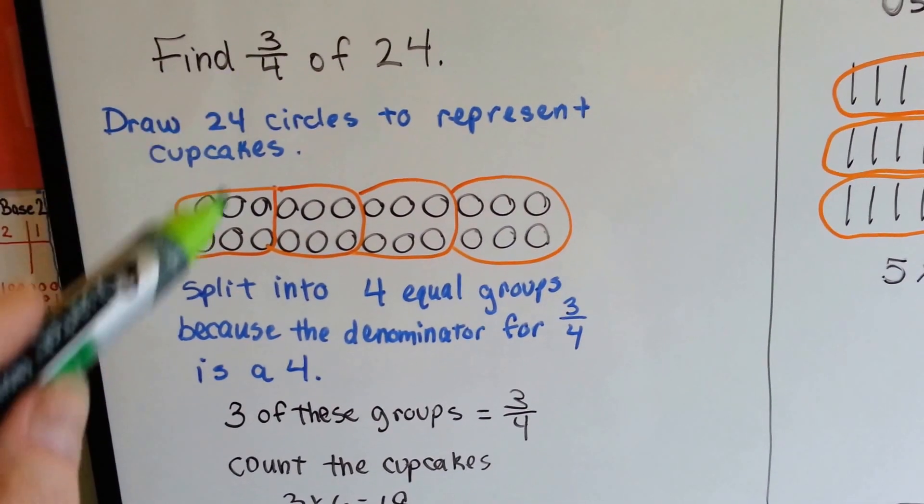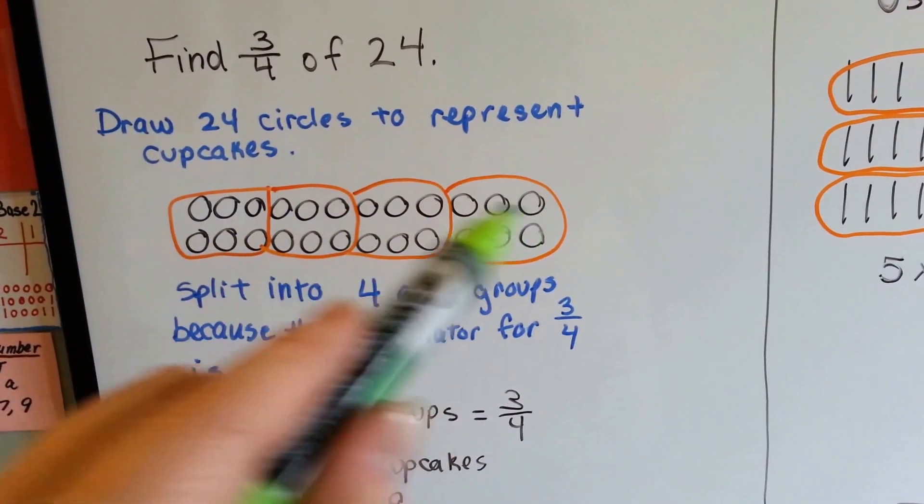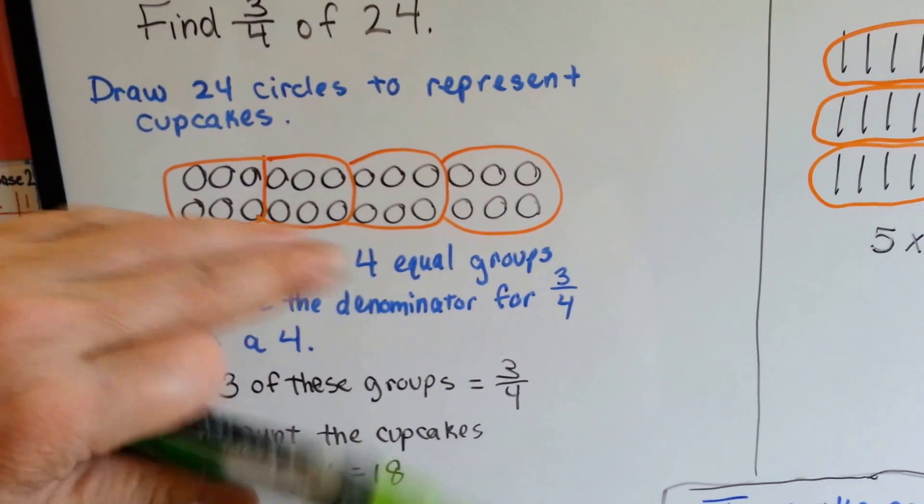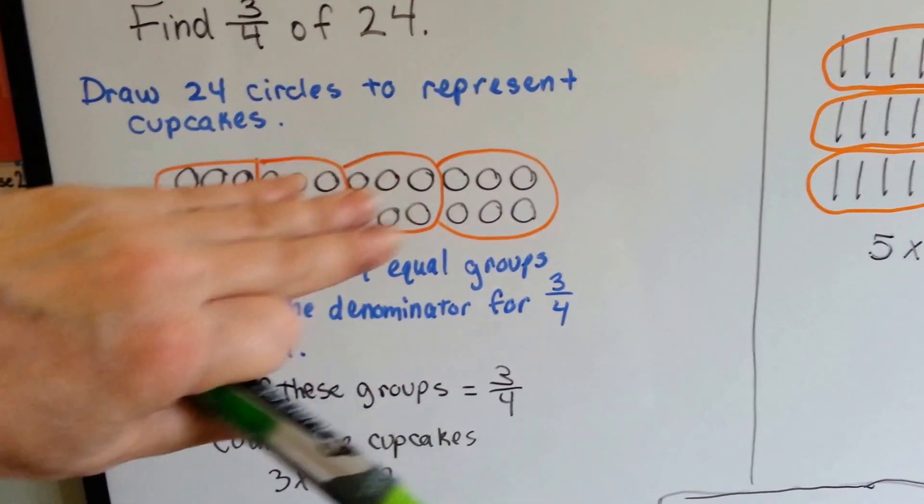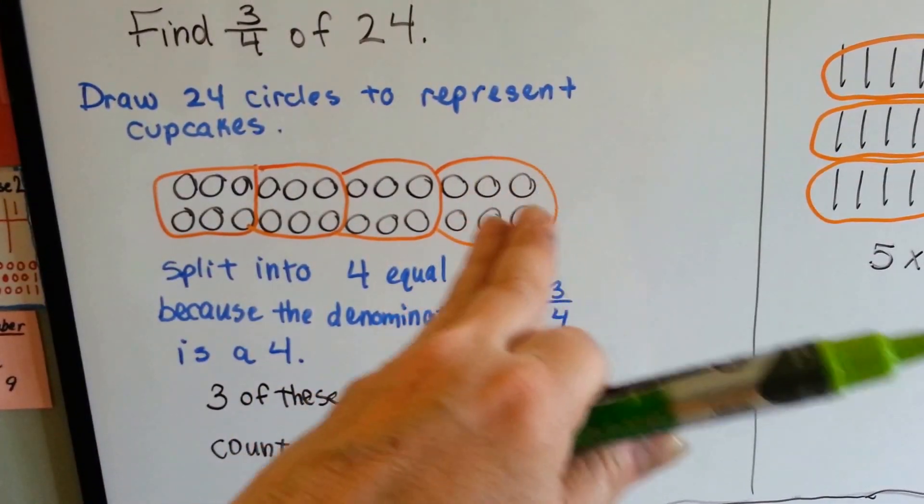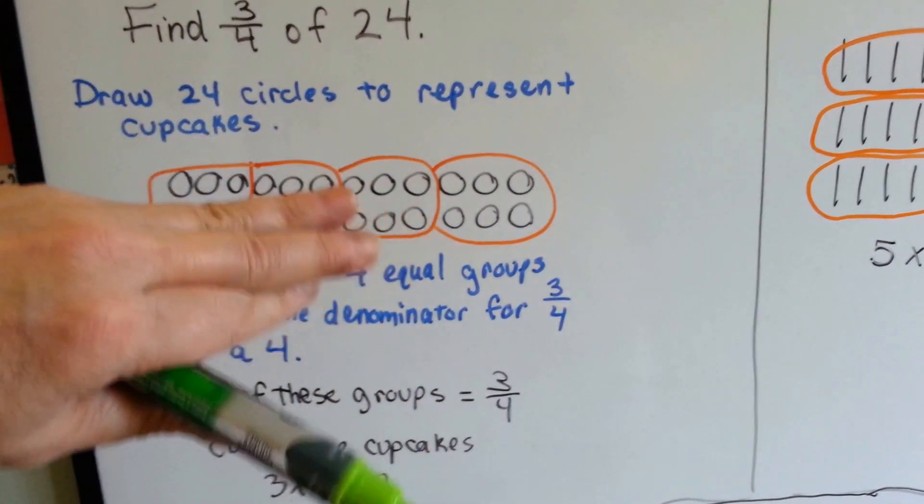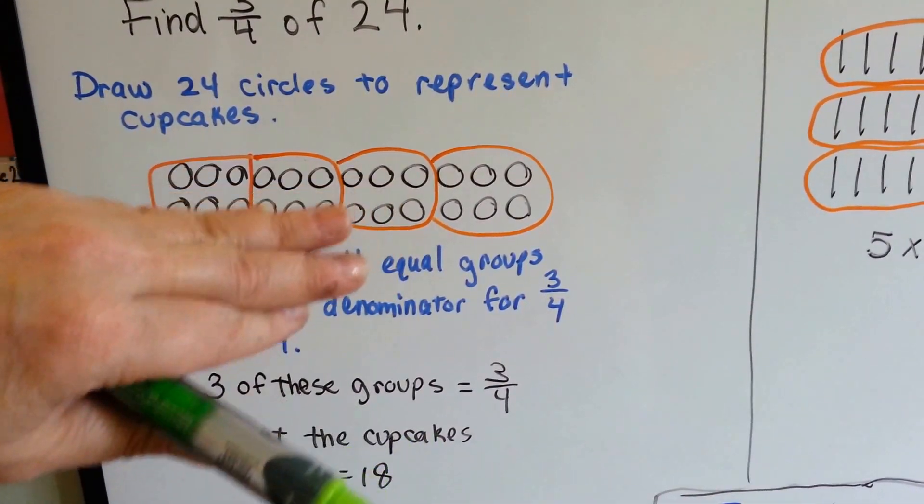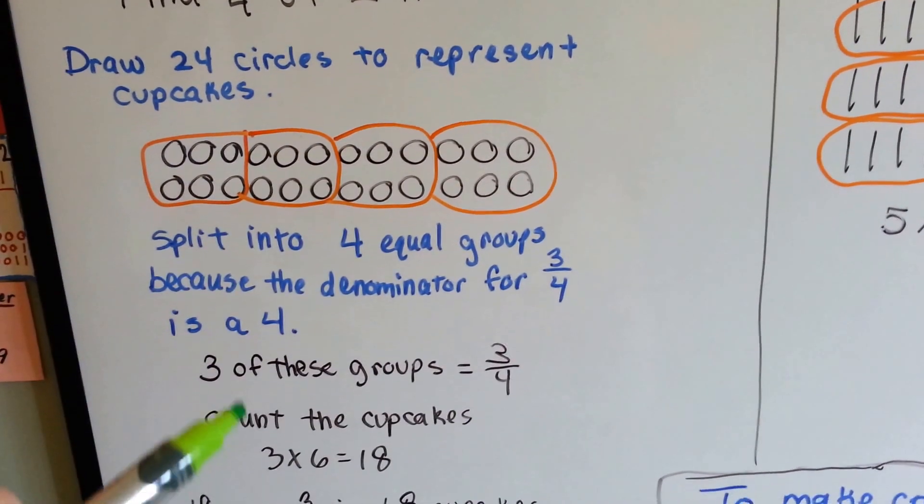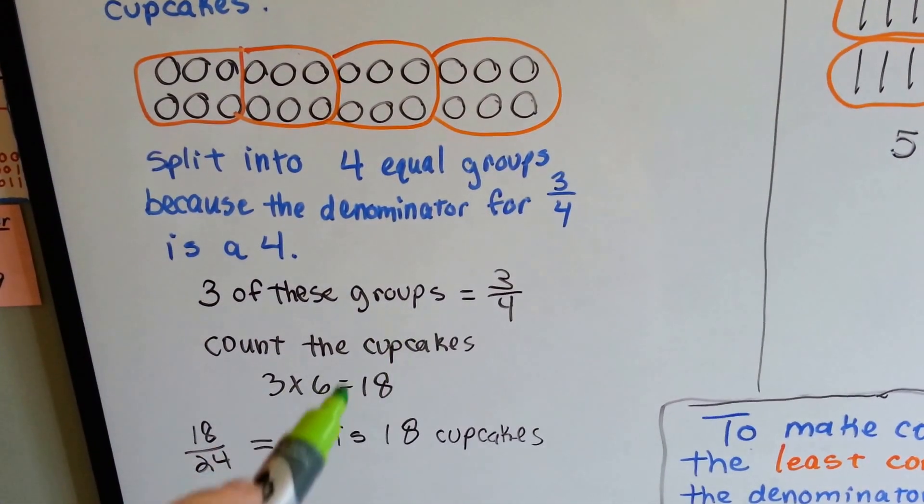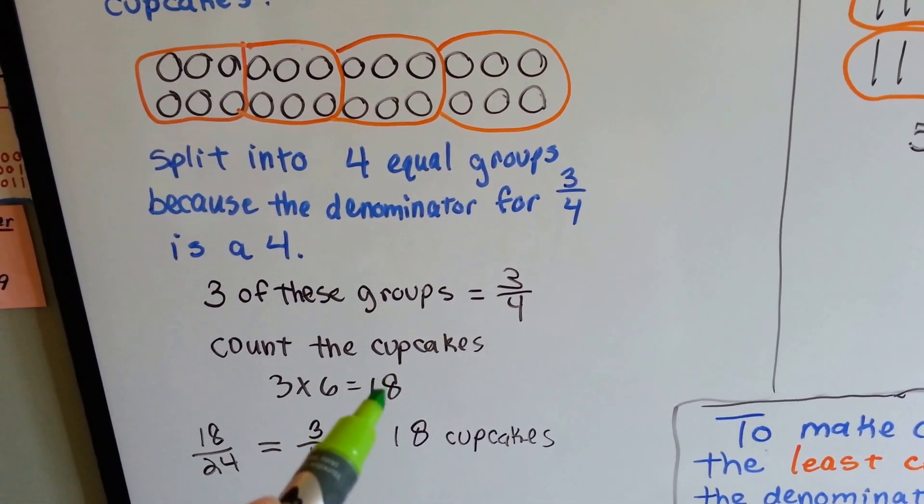Well, if three-fourths of them are chocolate, that means 3 groups of the 4 are chocolate. So that means these 3 are chocolate, and this is one-fourth—it's not chocolate, it's vanilla. So how many cupcakes are in these 3 groups? We count them up. 6 times 3 is 18. So three-fourths of 24 is 18.